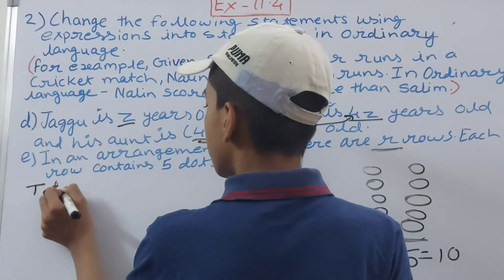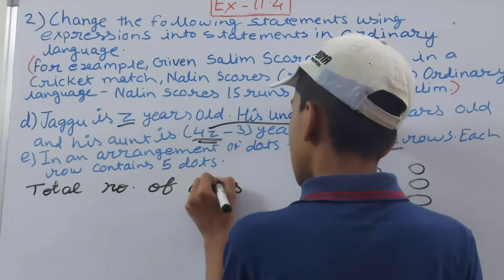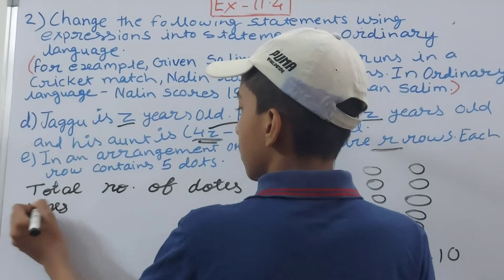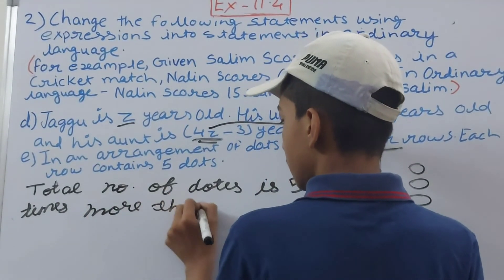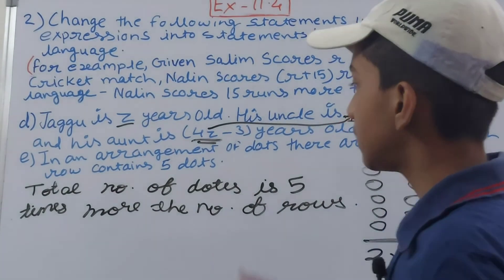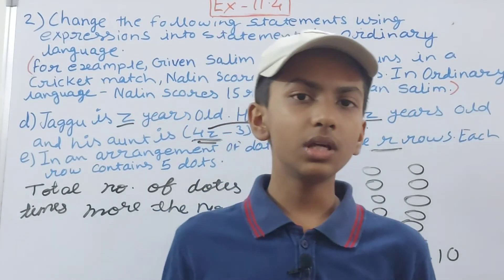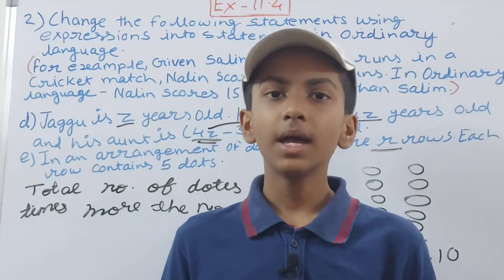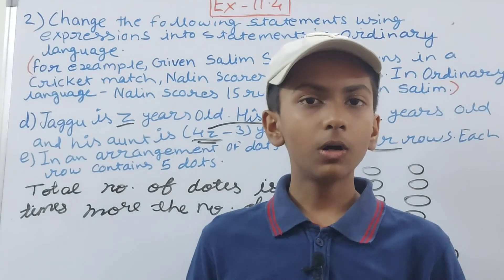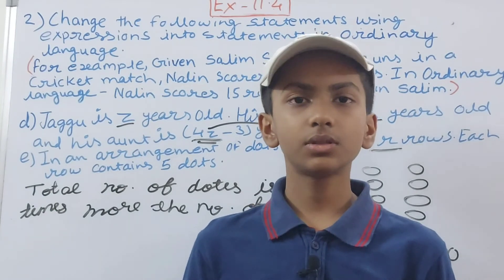We write: total number of dots is five times the number of rows. That is how we have converted this into the statement. Friends, this is all for today. If you are new to my YouTube channel do not forget to subscribe and hit the bell icon so that you get notified whenever I upload a new video. Also leave a like on this video. Till then, stay home, stay safe, wear a mask, maintain social distancing, take good care of yourself. Bye bye.